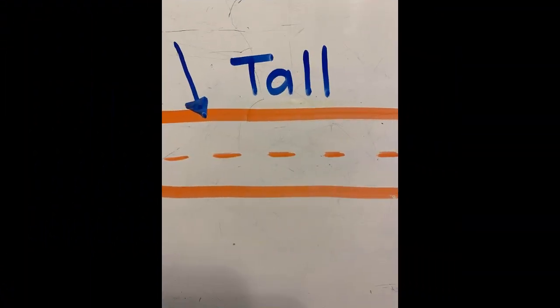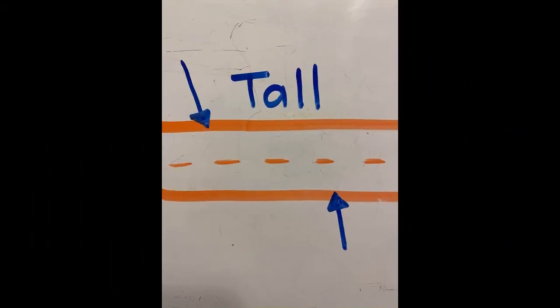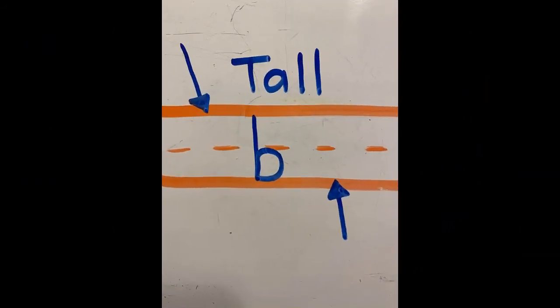Tall letters start at the top line. They bump the bottom line. Letter B is a tall letter.